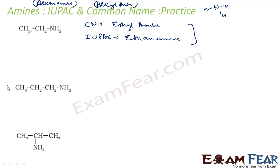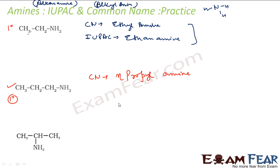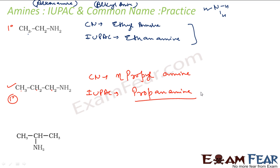For this next compound — again comparing with ammonia, only one hydrogen is replaced and two hydrogens are intact, so this is also first-degree. The common name is n-propylamine. For the IUPAC name: the chain is propane, all single bonds, replace E with amine — so it is propanamine.